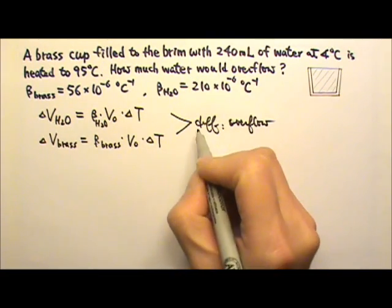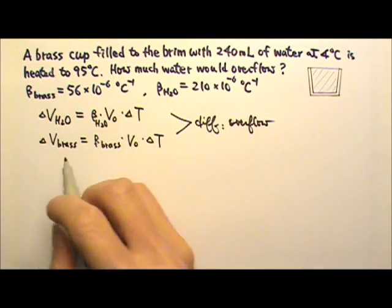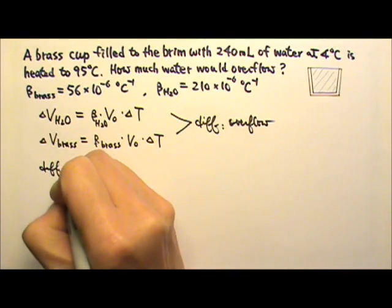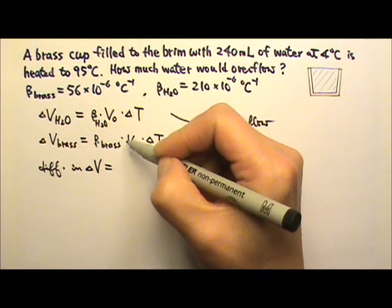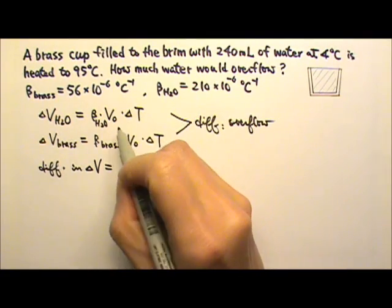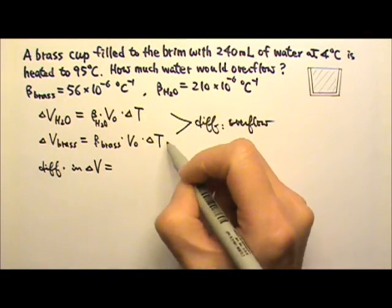So if we want to find the amount overflow, we just need to find the difference. The difference in delta V would equal to this one minus that, and we can factor out the V₀ and the delta T.